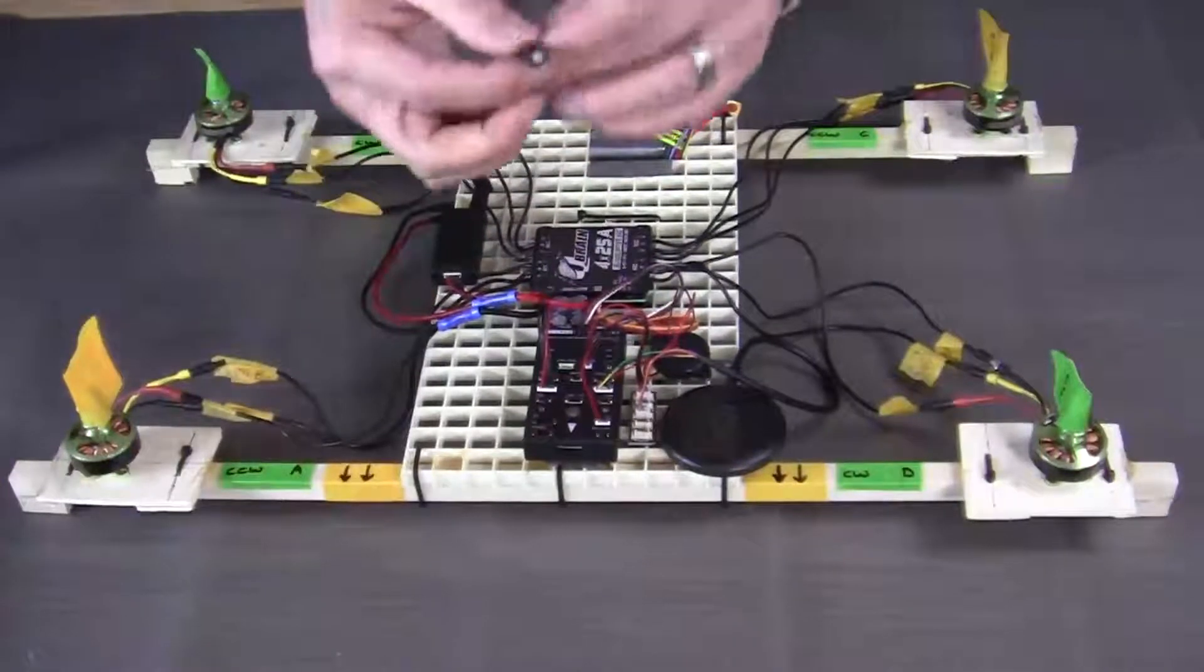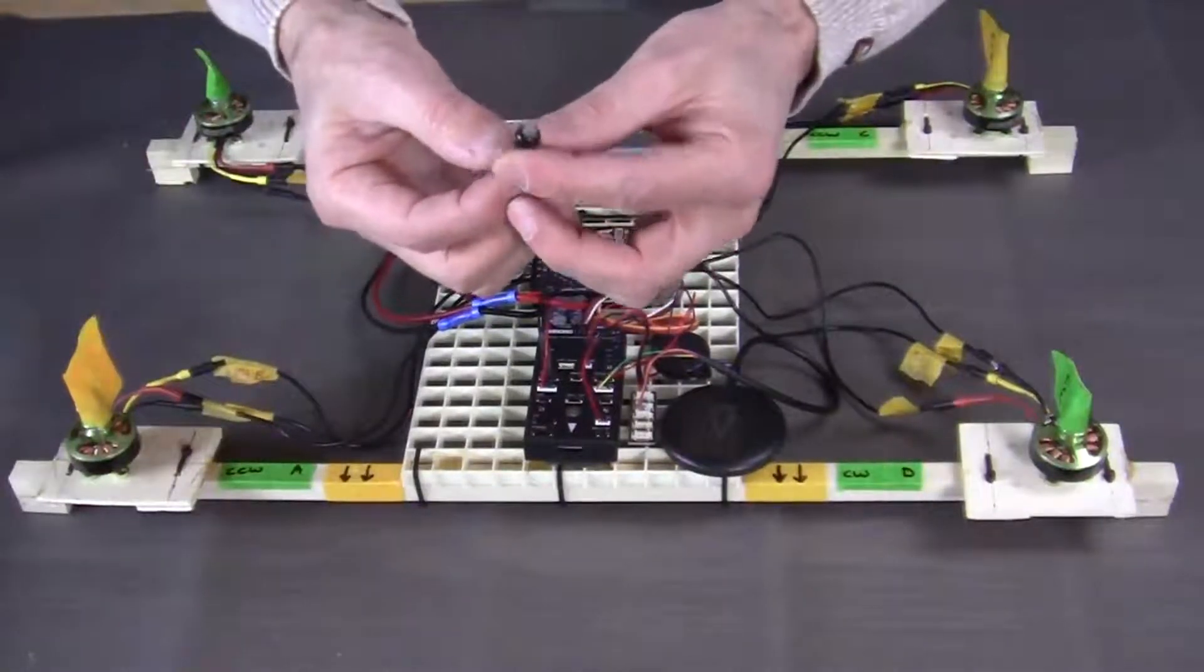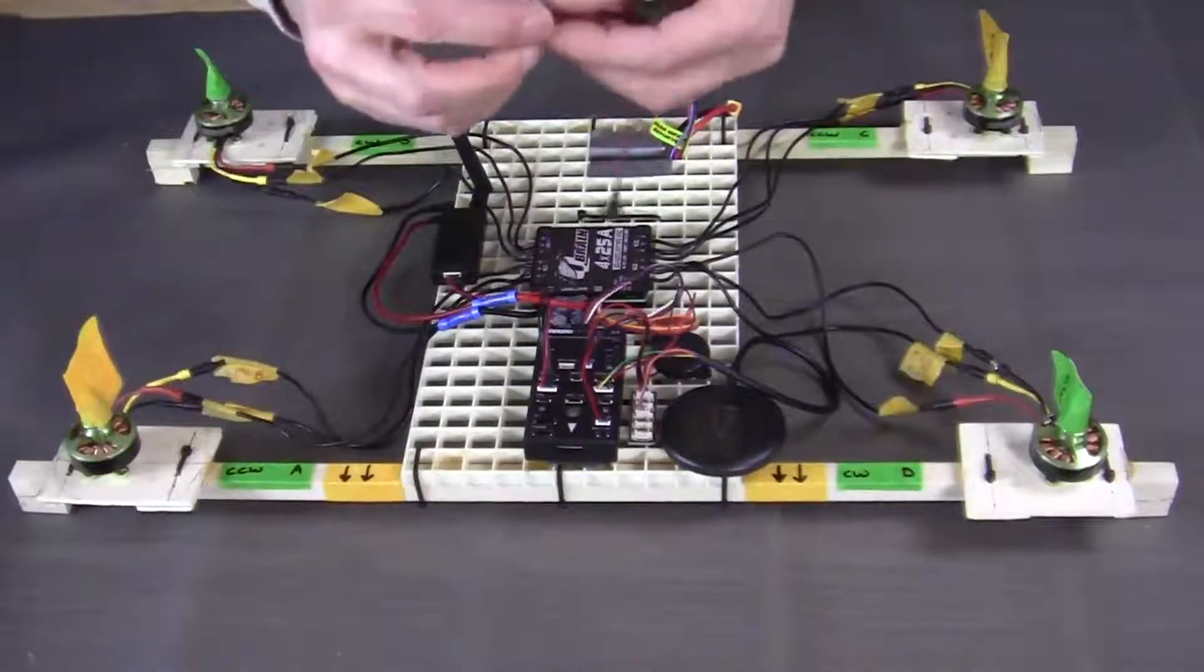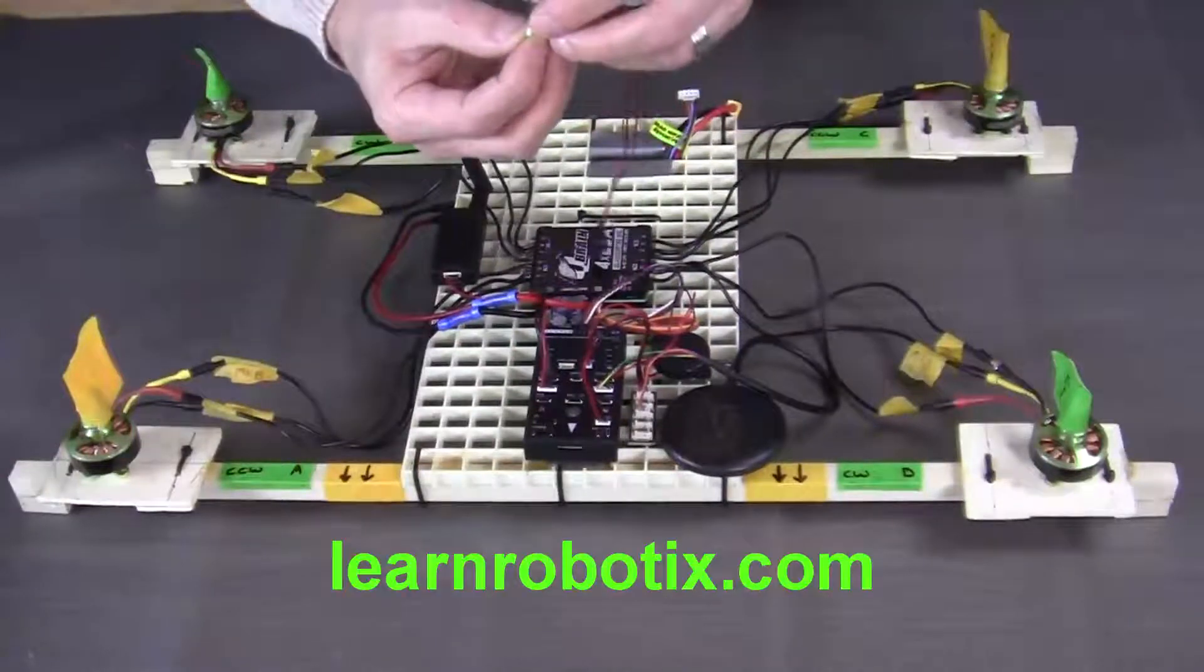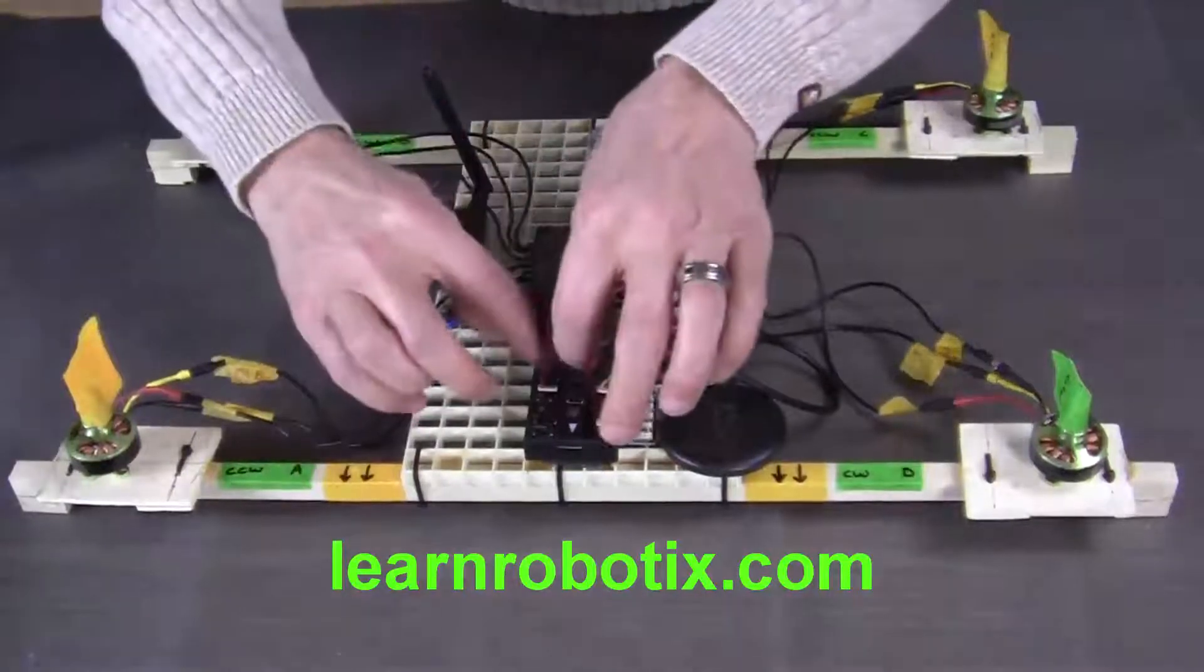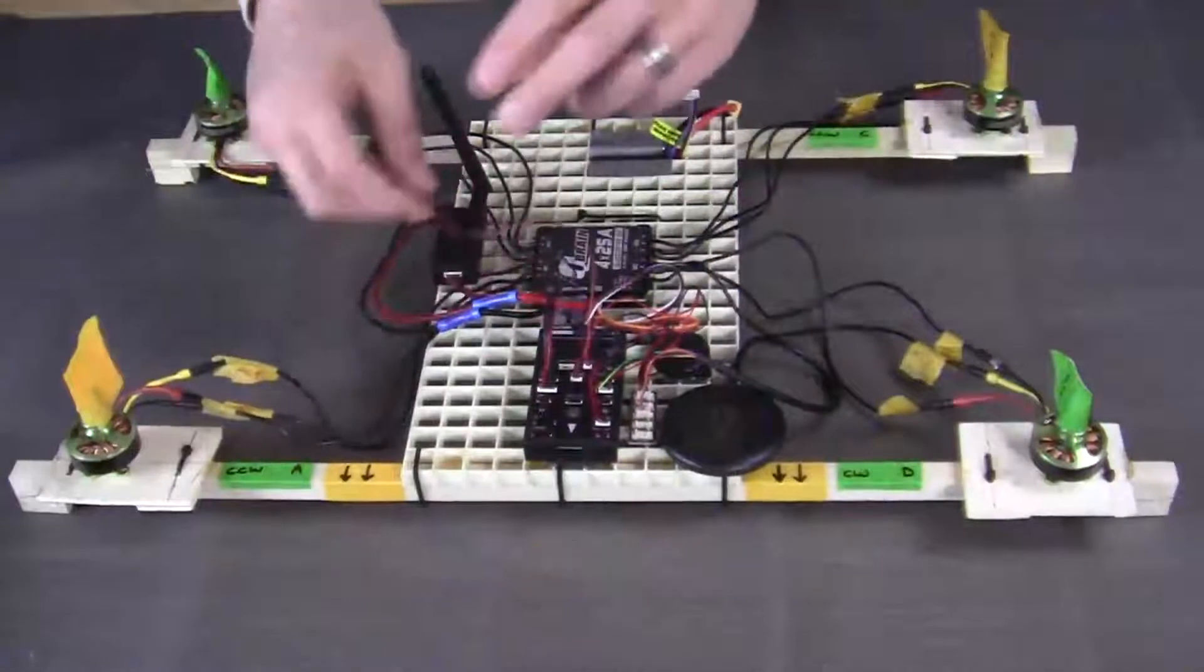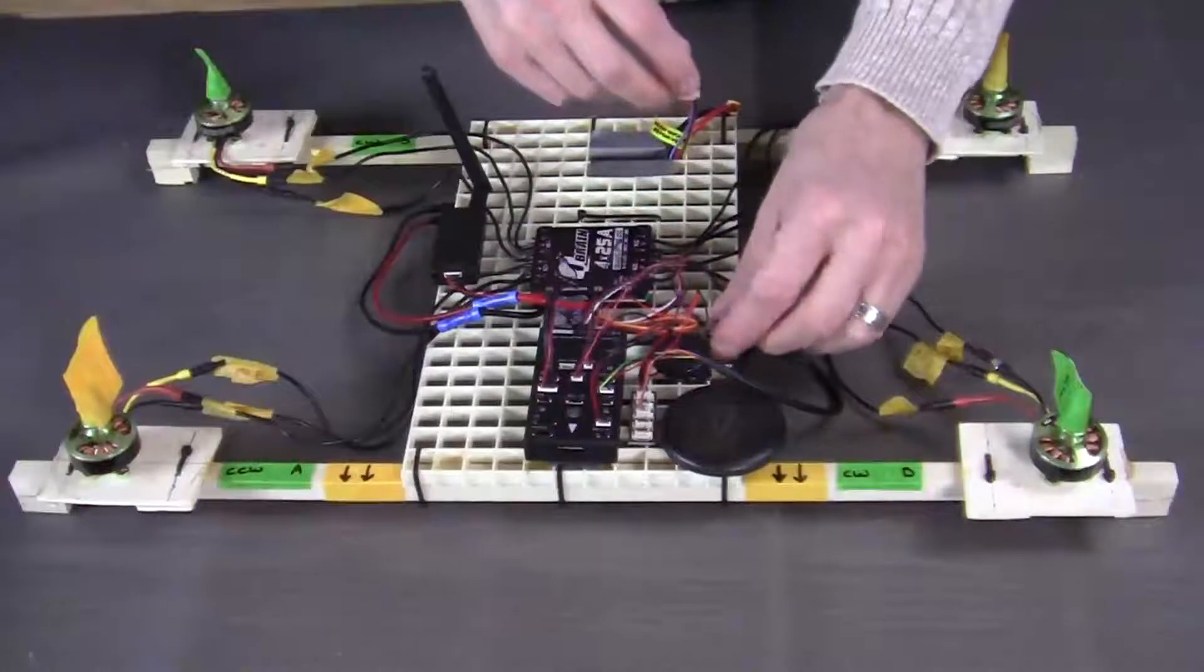Now what we want to do is connect this little switch to the PixHawk. And it goes into the socket that's called switch. Again, line up your little notch on the connector with the notch on the socket of the PixHawk. And then just push it in until it's tight. So we'll just set that over here for now.